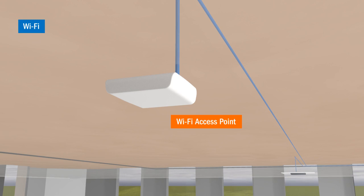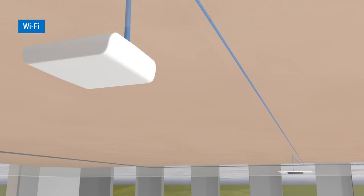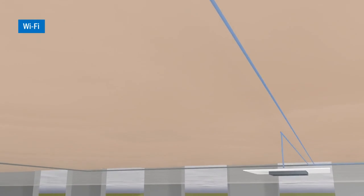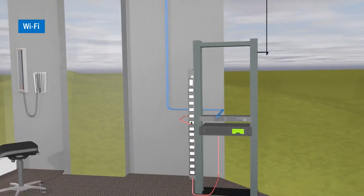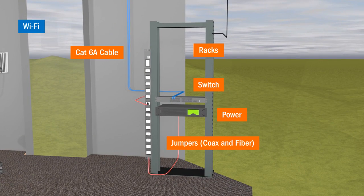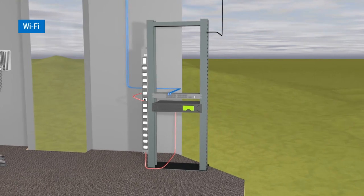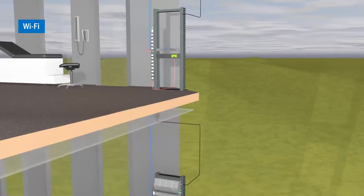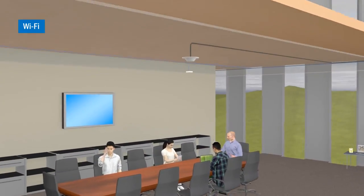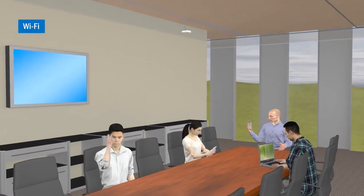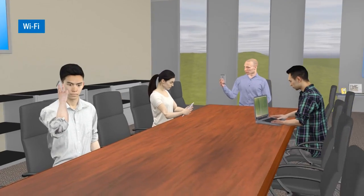What is Wi-Fi? Wi-Fi is a network that allows for internet connectivity throughout a building for both corporate and privately owned devices. As Millennials come into the workplace, they expect to be able to connect anywhere, anytime, and with the prevalence of BYOD, people require wireless internet access to maximize work efficiency.